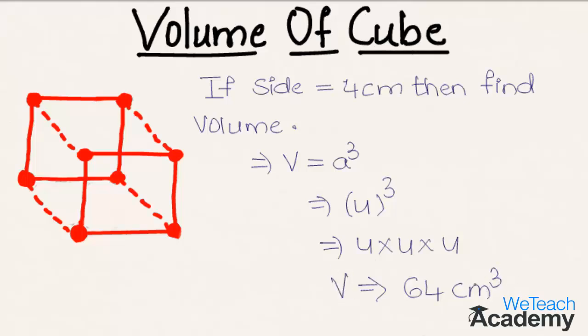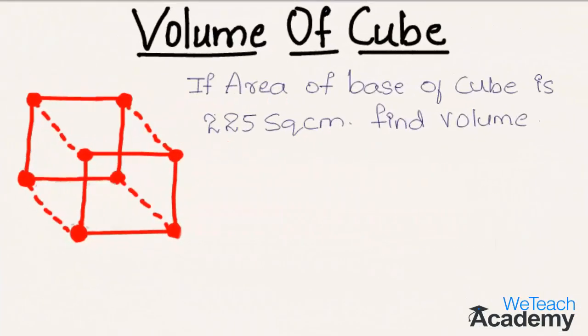Now let us proceed and discuss another example. Here the given example is: if area of base of cube is 225 square centimeters, then find the volume. Area of base of a cube, which is given by the formula a square, is to be equated to the given area of base, that is 225. That implies we get a equal to square root of 225, and we already know that 225 is a perfect square number, that is 15 into 15, so we get a equal to 15 centimeters.